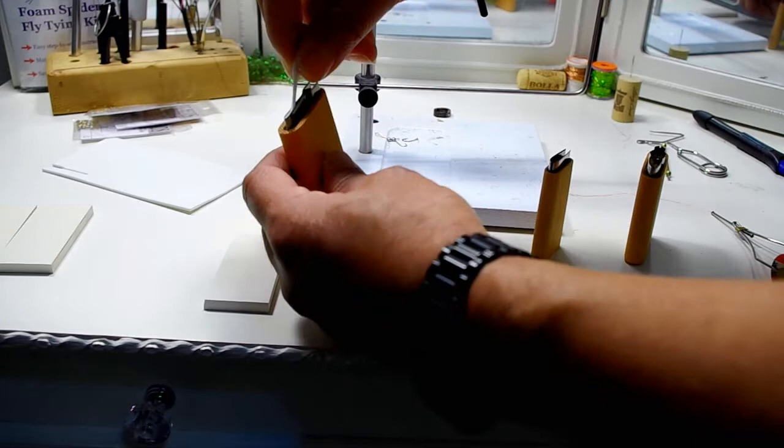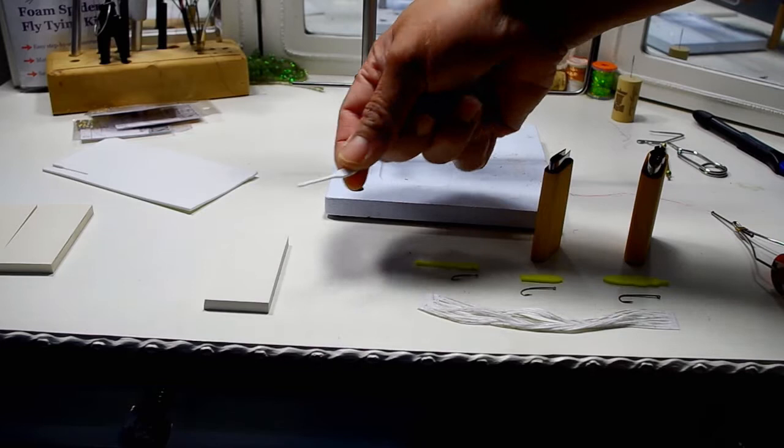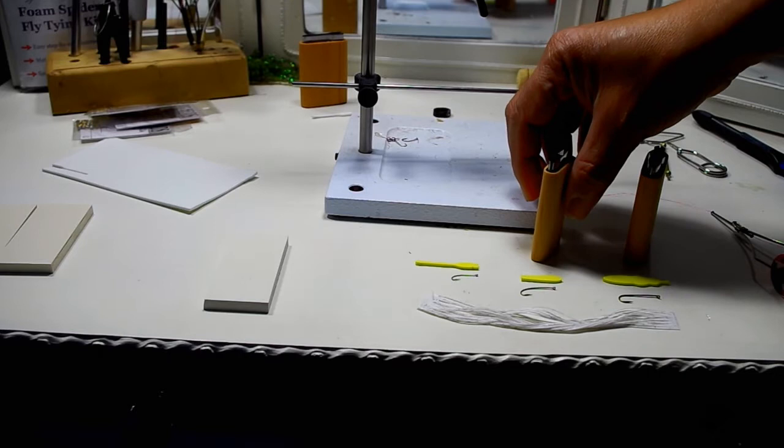We'll just pop it out real quick here. It makes a consistent pattern. This is one that we like using in the summer when the dragonflies are starting to pop up or the damselflies and we definitely get some bass as well as some bluegill and sunfish taking them. So that's the damselfly pattern.